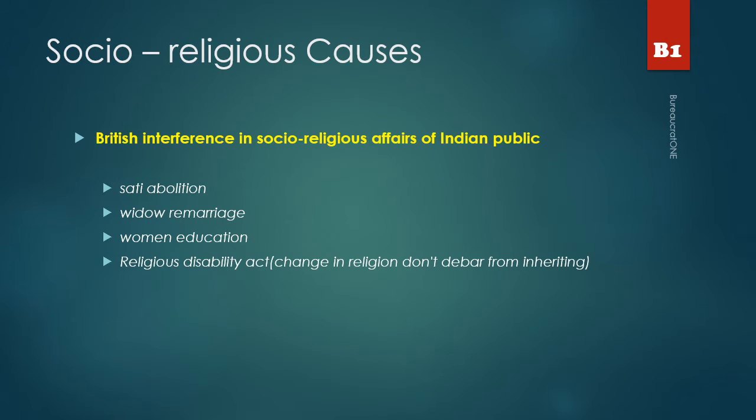Socio-religious causes: British interference in socio-religious affairs of the Indian public was a key reason for the revolt. Examples include Sati Abolition, Widow Remarriage, Women's Education, and the Religious Disability Act. Earlier, whoever converted to Christianity would lose their right to inherit property, but this act allowed them to inherit that property.